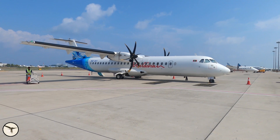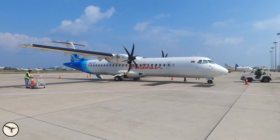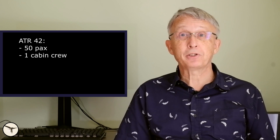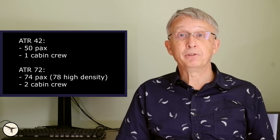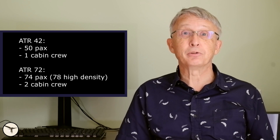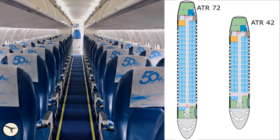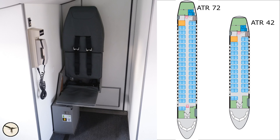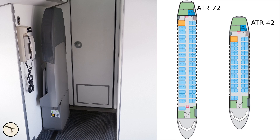Since the ATR 72 is 4.5 meters longer than the 42, it can carry more passengers. The 42 is certified for up to 50 passengers with one cabin crew, and the 72 can carry up to 74 passengers, or 78 in a high-density configuration. The 72 requires two cabin crew. All aircraft have a seat for the cabin crew in the aft of the cabin, next to the entrance door. In the 72, the second cabin crew member is seated in the forward part of the cabin, in front of the door to the cargo compartment and cockpit. This seat can be stowed away.